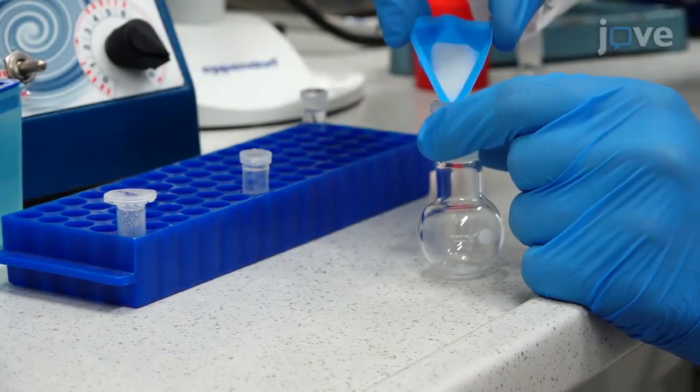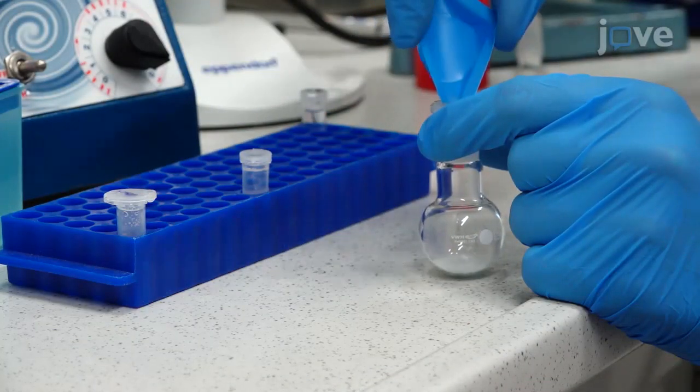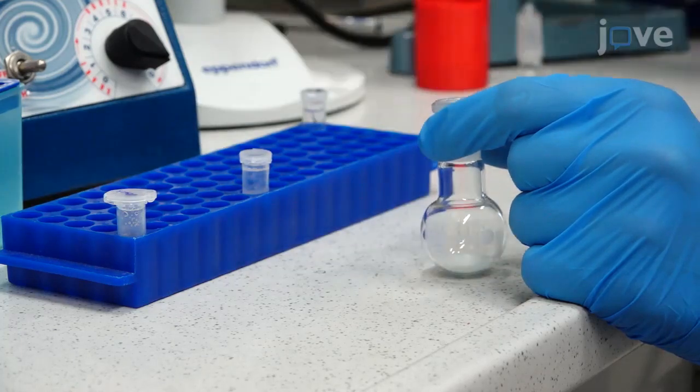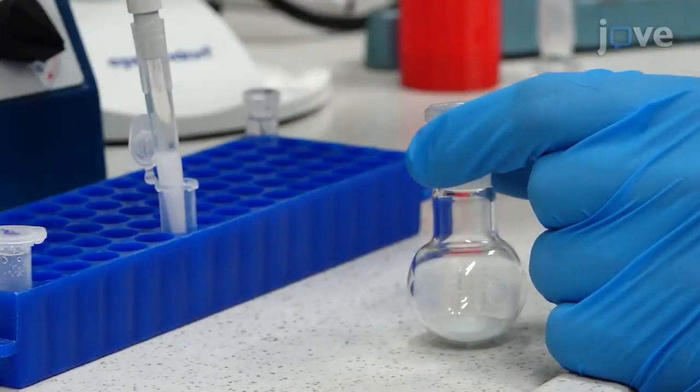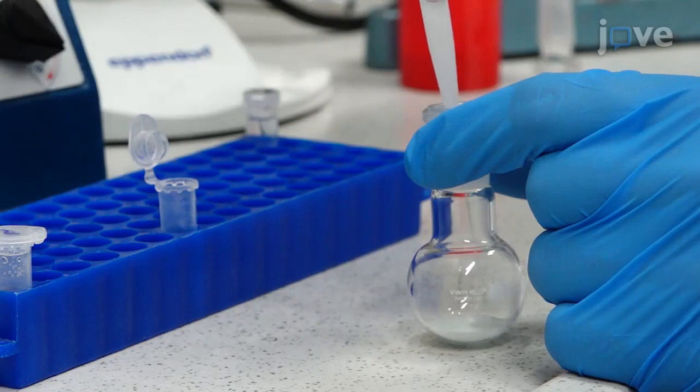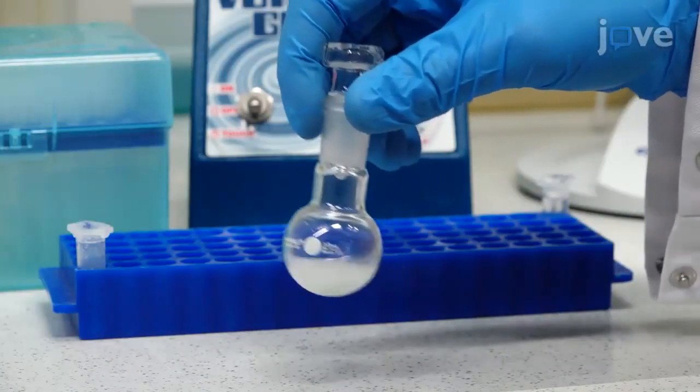Next add 1.5 grams of spherical glass beads to a 10 milliliter round bottom flask. Add the ELP and chloroform methanol solution to the round bottom flask and gently shake to mix.